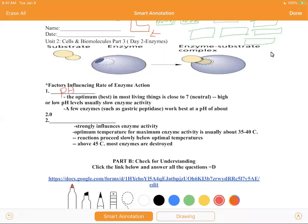A few enzymes, such as gastric peptidase, work best at a pH of about 2.0, which is very, very acidic. This is a very acidic environment because it's so low on the pH scale. And we know gastric peptidase is an enzyme because, you guessed it, it ends in A-S-E.